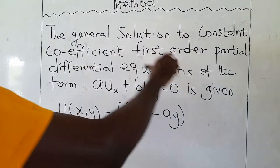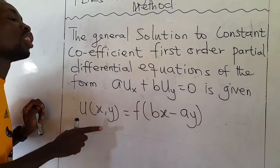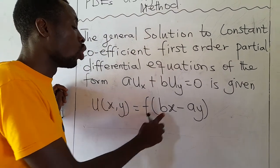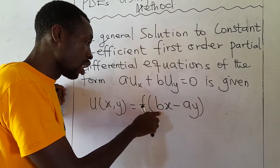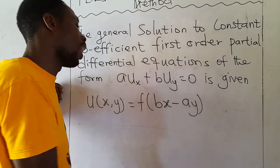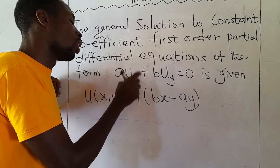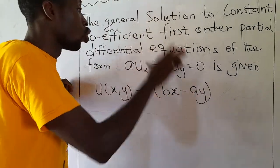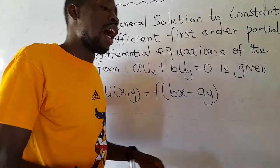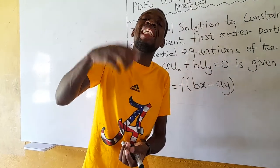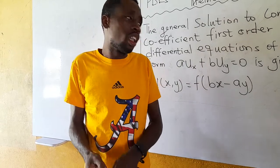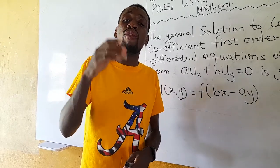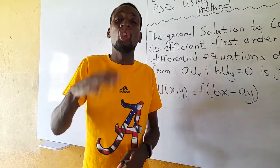The general solution to constant coefficient first order partial differential equations of this form is given as U of x and y equal to F of (Bx minus Ay), where B is the coefficient of the partial differentiation of U with respect to y, and A is the coefficient of the partial differentiation of U with respect to x. I must stress that you can solve this using the Lagrange method as well. However, if the question limits you to the geometric method, you must use it — that is why there is a need to know this formula.